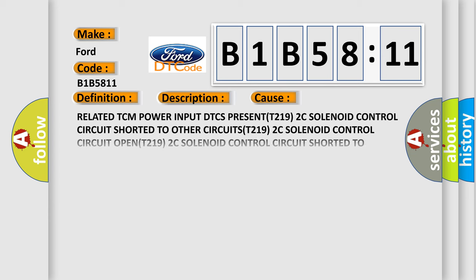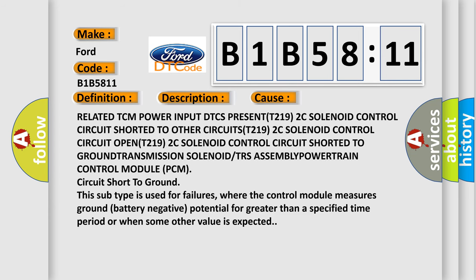This diagnostic error occurs most often in these cases: Related TCM power input DTC PRESENT T219 2C solenoid control circuit shorted to other circuits T219 2C solenoid control circuit shorted to ground transmission solenoid TRS assembly powertrain control module.